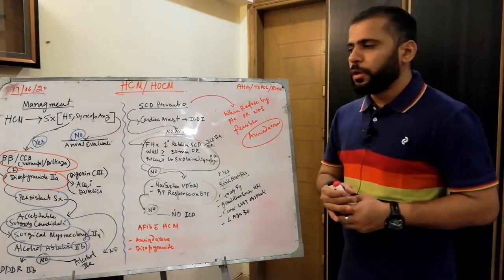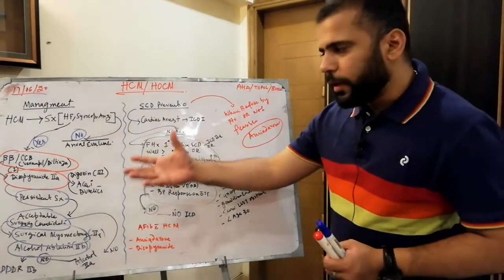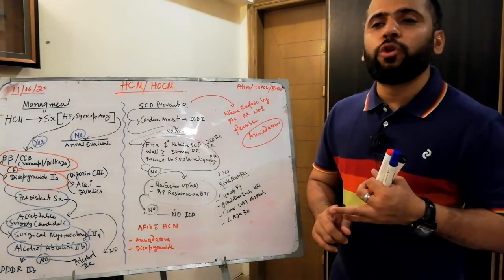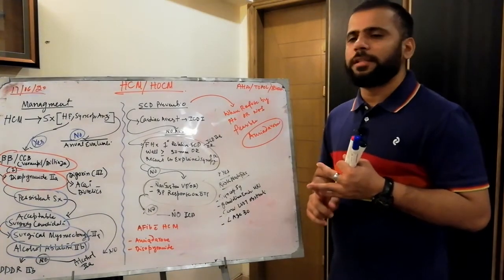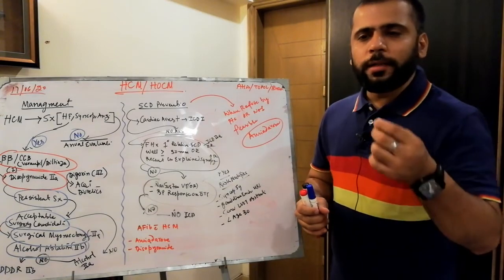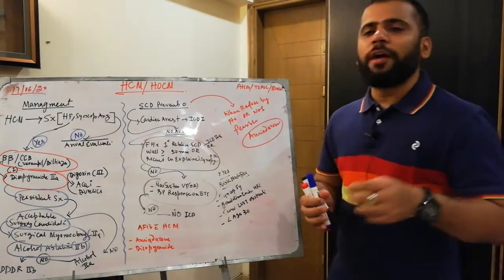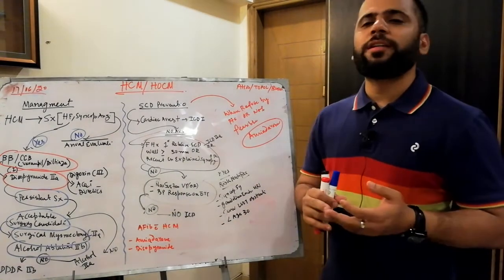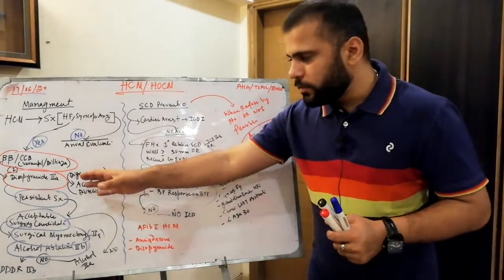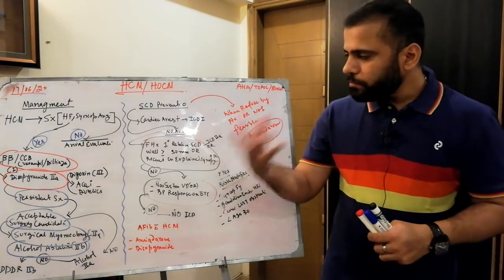If your HCM patient is in shock or heart failure, you will not give digoxin, noradrenaline, adrenaline, or dobutamine — these all worsen HCM. The only drug you can give for hemodynamic support in critically ill HCM patients is phenylephrine. Digoxin is also class 3 because of its inotropic effect.